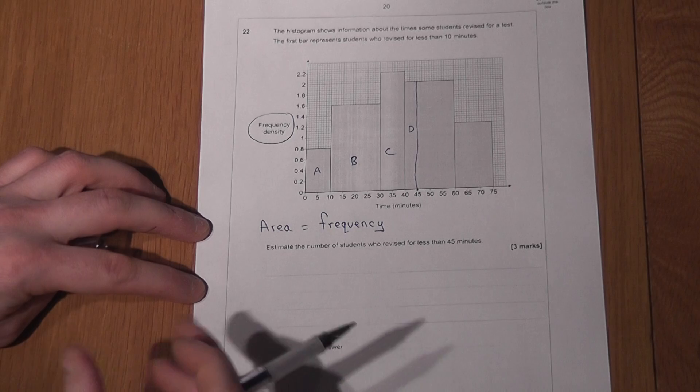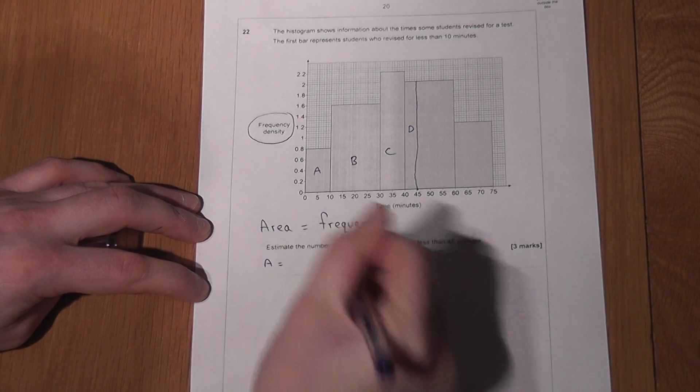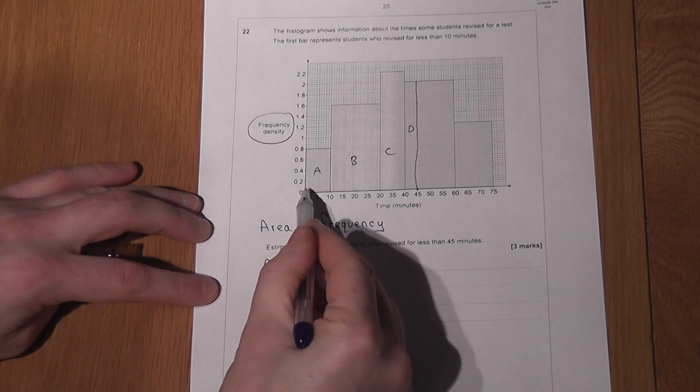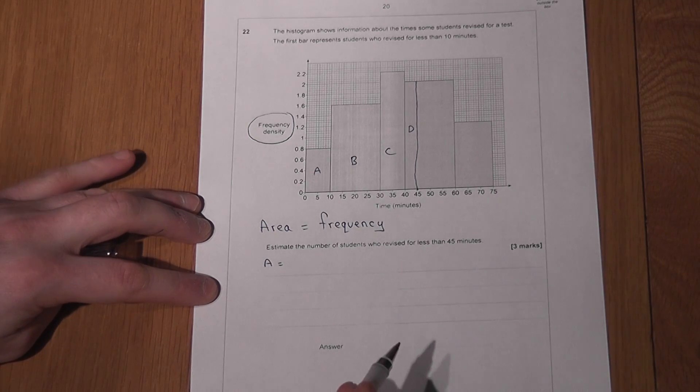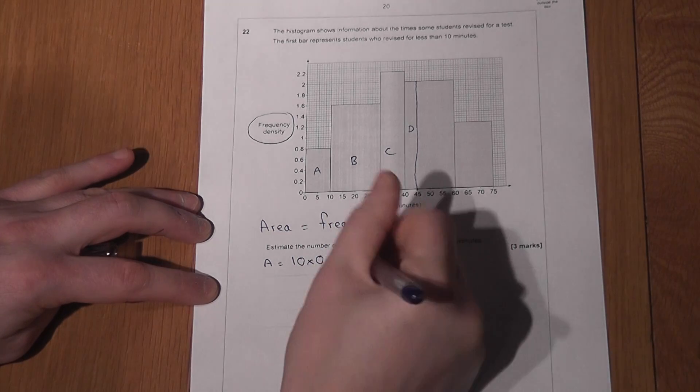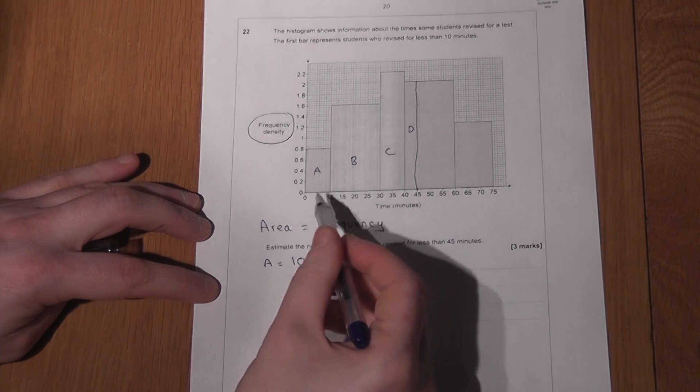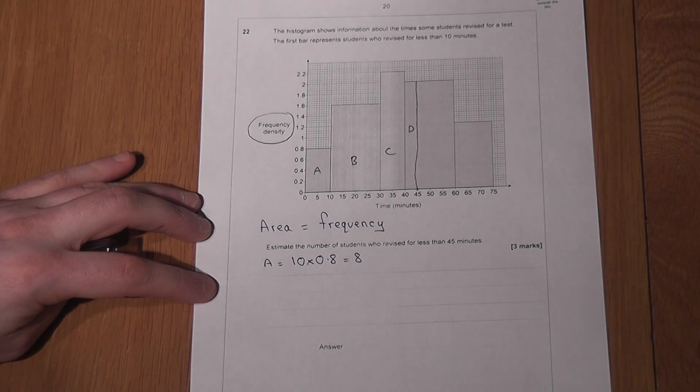So if I look at area A, it's got a width of 10 and a height of 0.8. So if I do 10 lots of 0.8, I get the answer 8. That just means that 8 people took between 0 and 10 minutes to revise for the test.